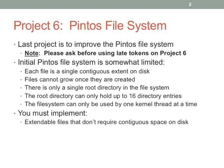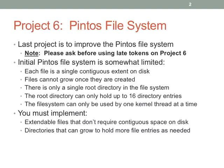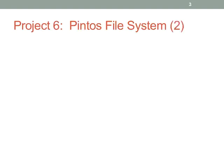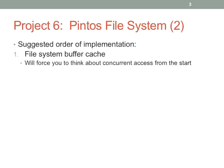So: extendable files that don't require contiguous space on disk, directories that can grow to hold more file entries as needed, directory hierarchies, and support for fast concurrent access from many kernel threads. I'm going to try to talk about most of these topics today, and try to point out the biggest icebergs that you need to be aware of and how you might consider tackling them.